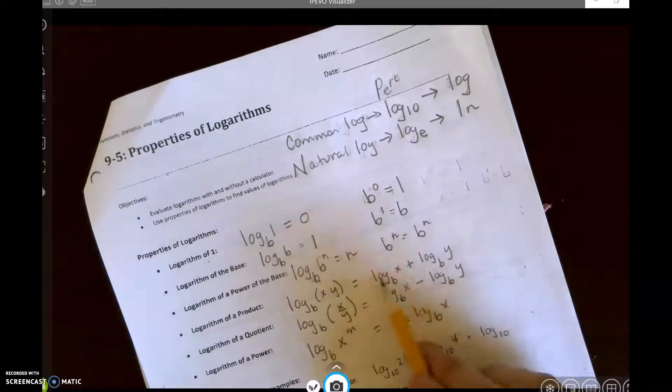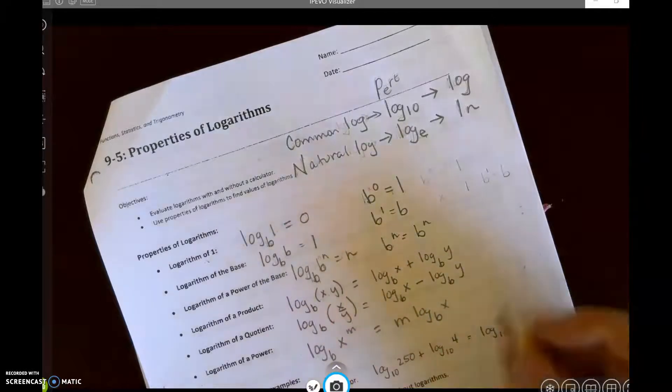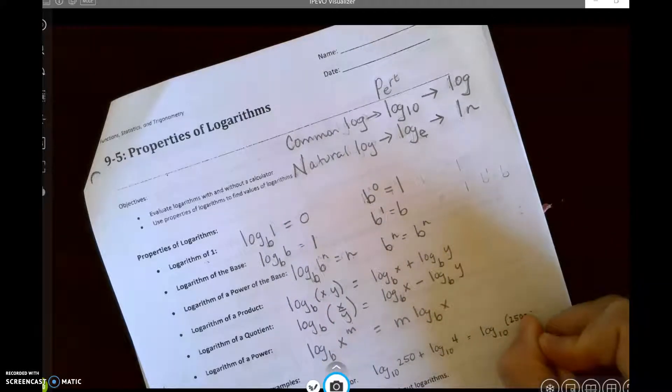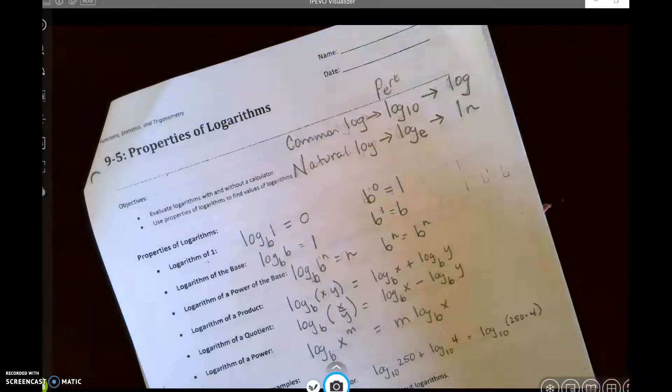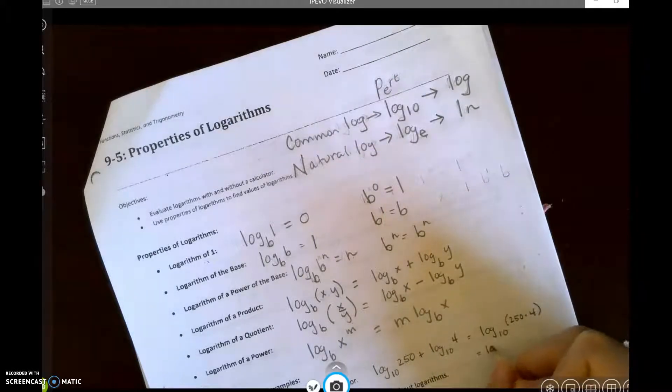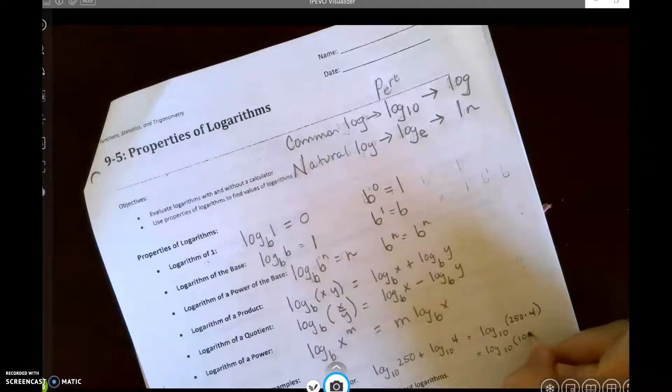Since it's written in addition, so it's expanded right now, we're going to condense it to 250 times 4. So we get log base 10 of 1,000.